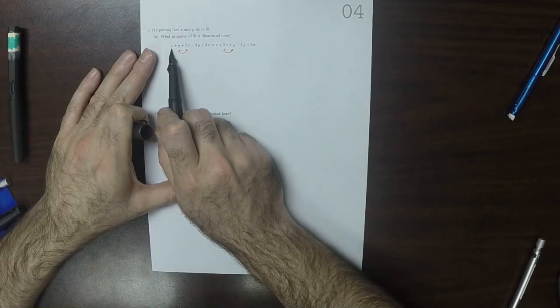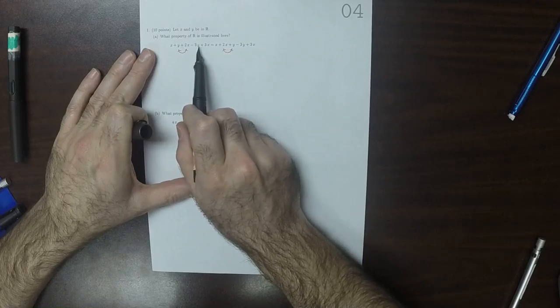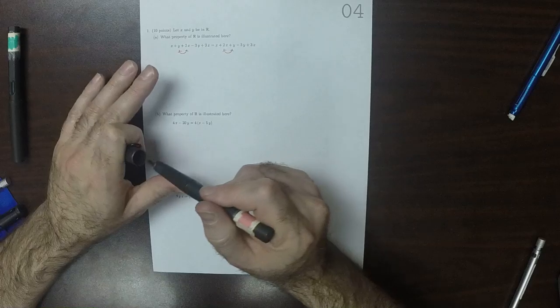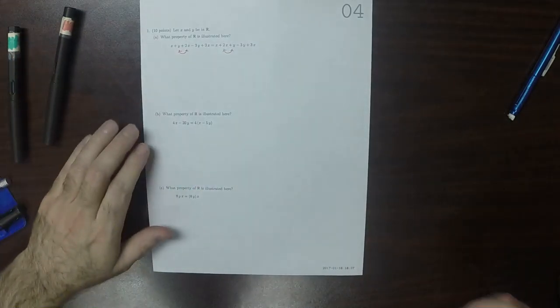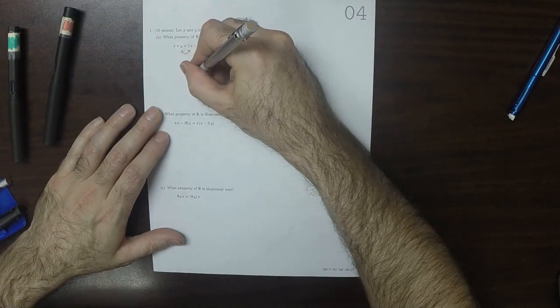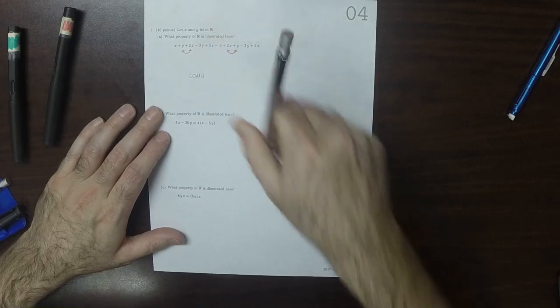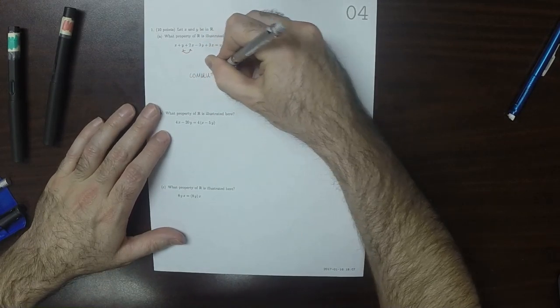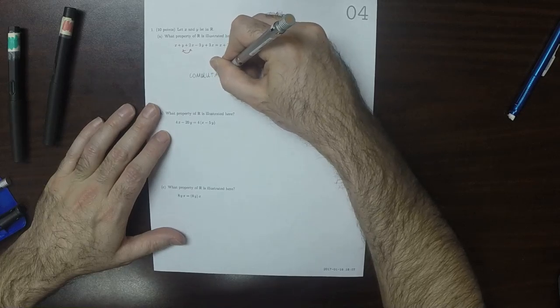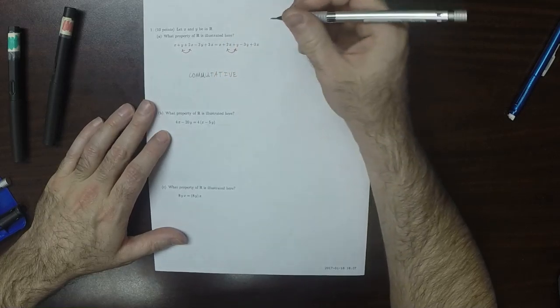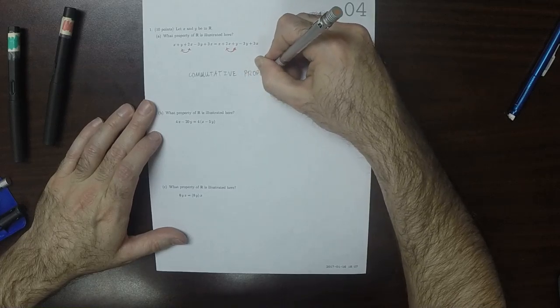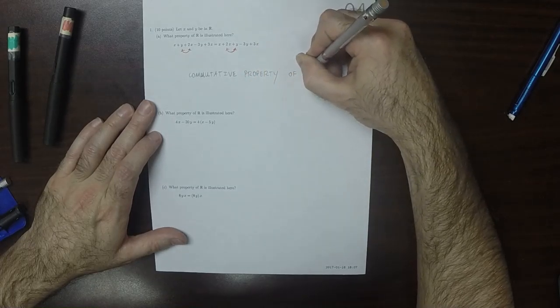It's x, and then skip those two, minus 3y, plus 3x. x, minus 3y, plus 3x. So this is the commutative property, commutative property of addition.